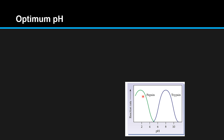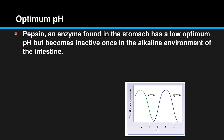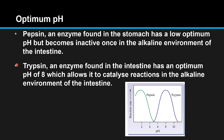Here we have two enzymes: pepsin, which is found in the stomach, and trypsin, which is found in the intestine. Pepsin has a low optimum pH but becomes inactive once in the alkaline environment of the intestine. Trypsin has an optimum pH of 8, which allows it to catalyze reactions in the alkaline environment of the intestine.